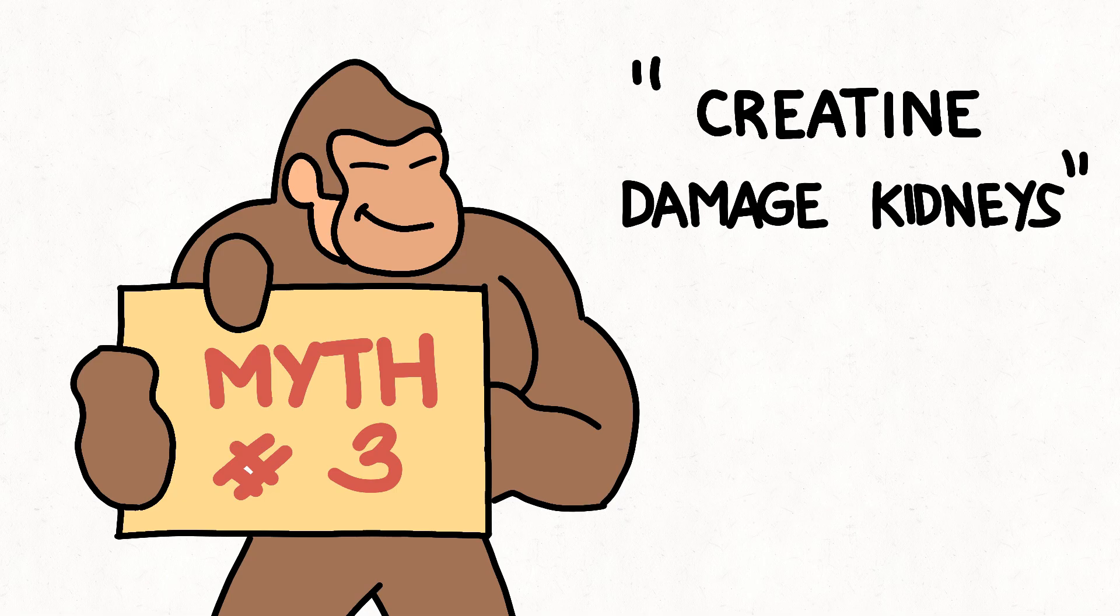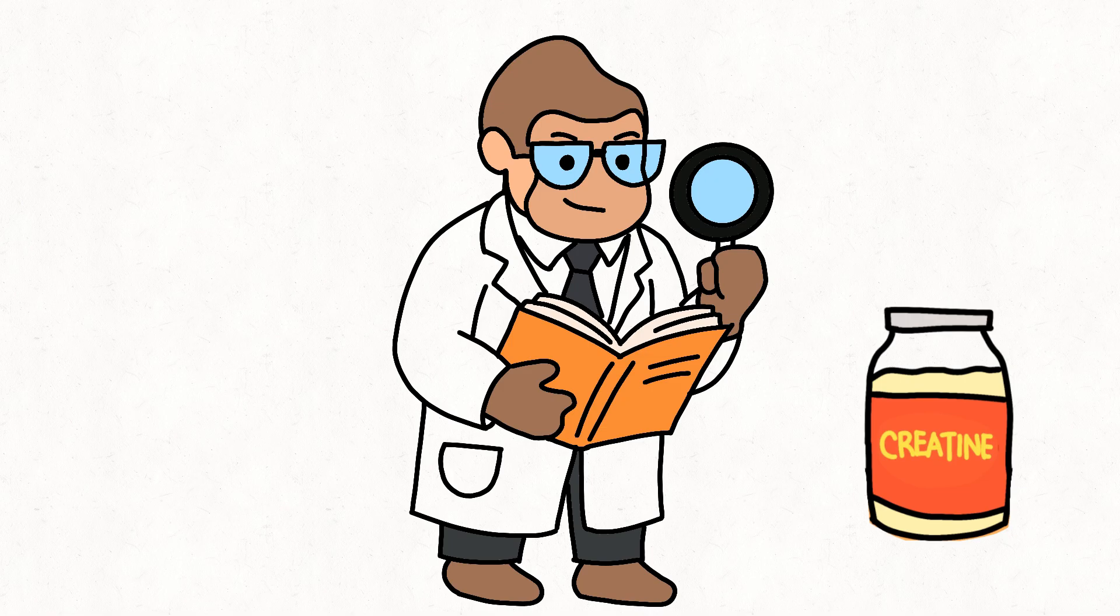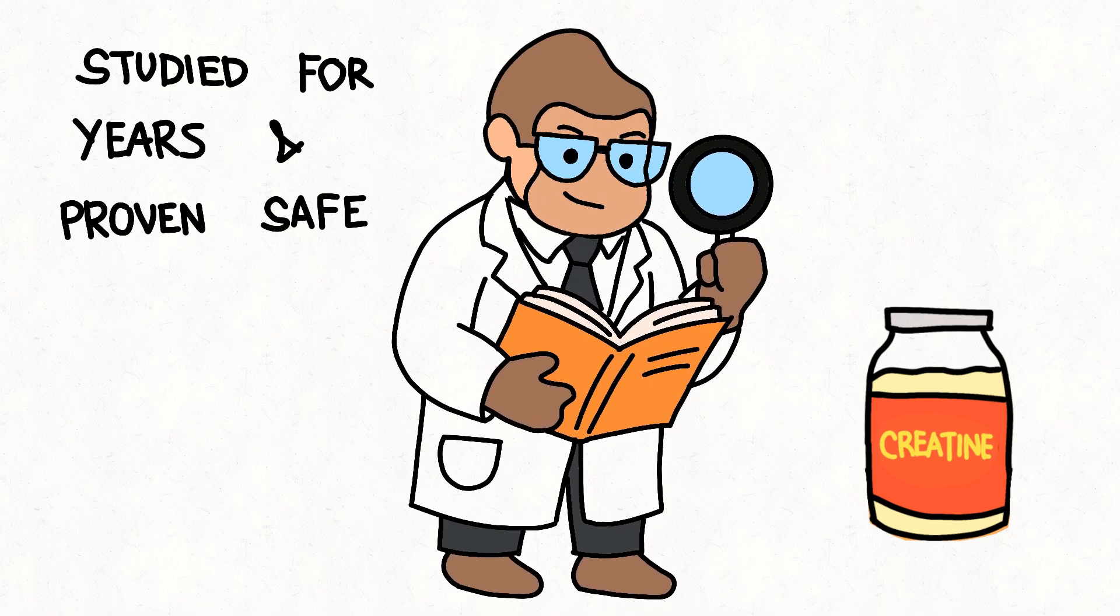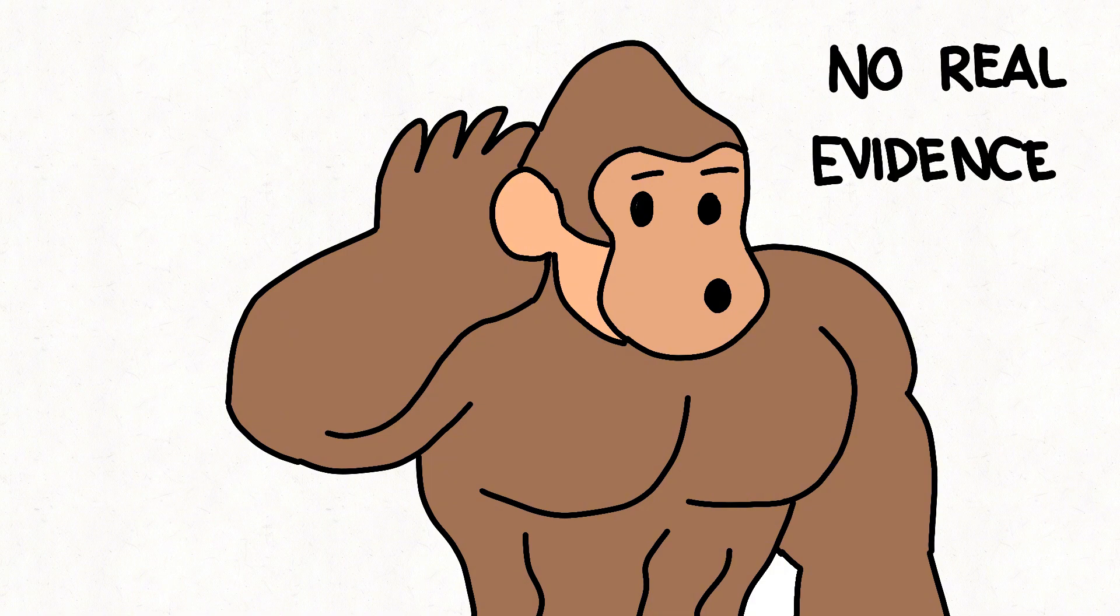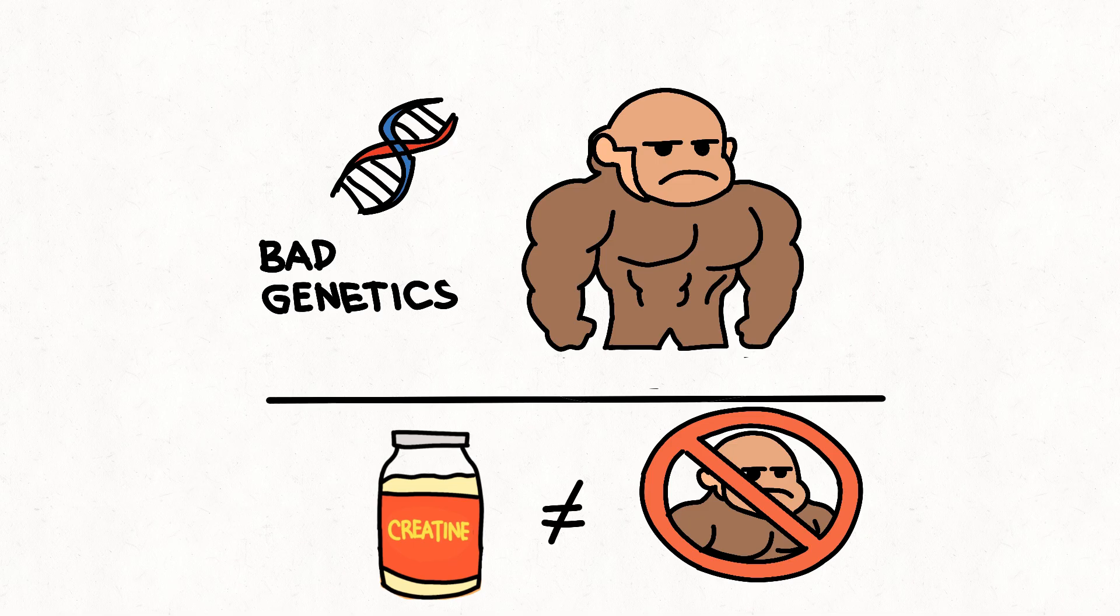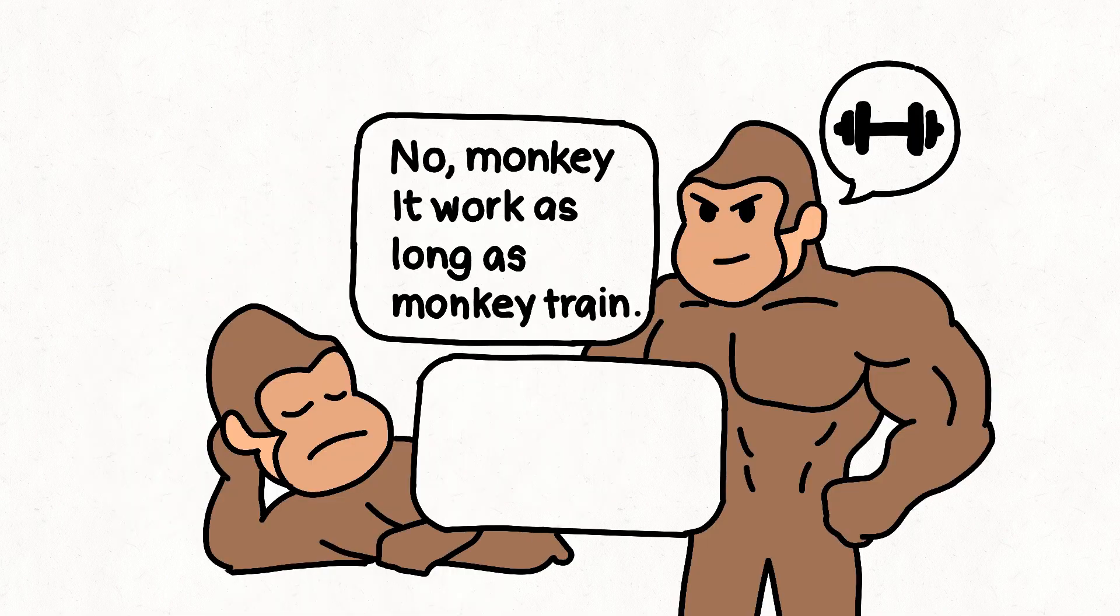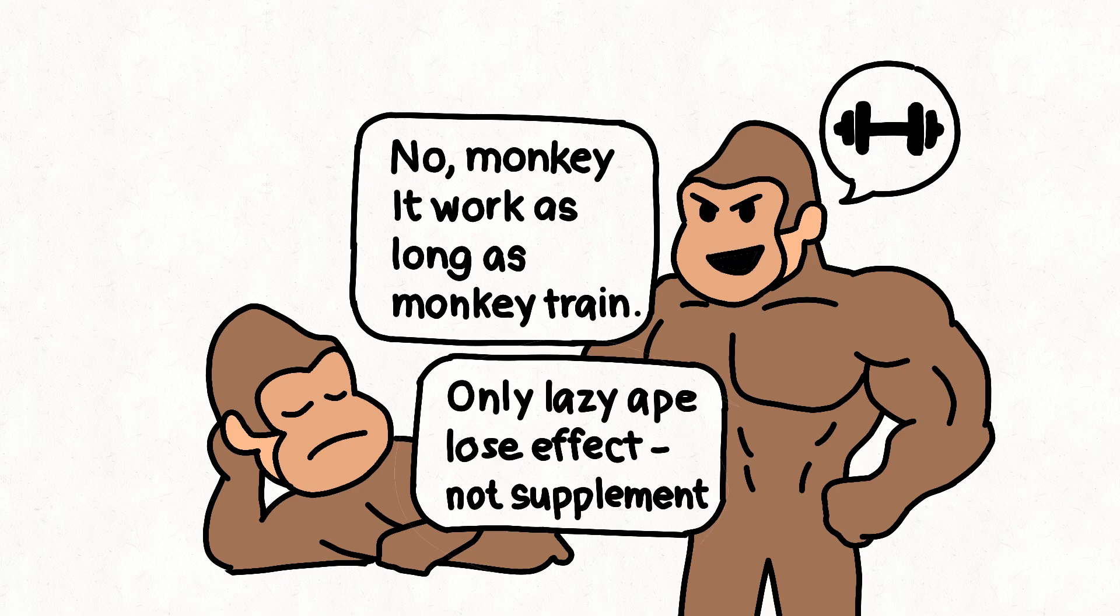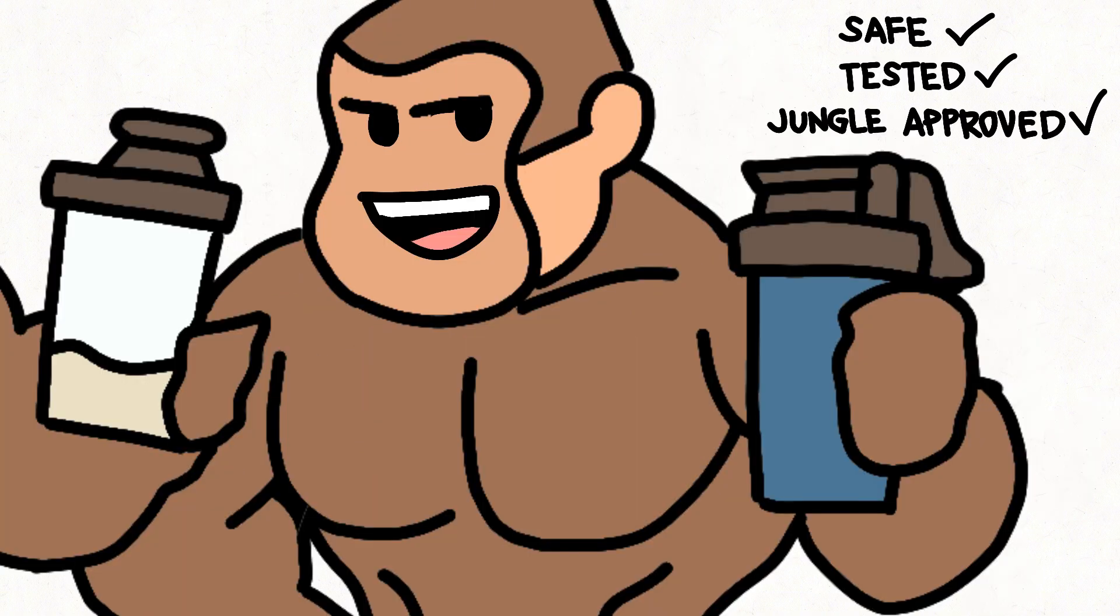Myth 3: Creatine damages kidneys. Only if monkey drinks no water and eats a trash diet. Study after study shows healthy apes are safe using creatine for years. Myth 4: Creatine causes hair loss. Jungle rumor. No real evidence. Only bad genetics make monkey bald. Creatine is not to blame for a shiny coconut head. Myth 5: Creatine stops working over time. No, monkey. It works as long as monkey trains. Only lazy apes lose the effect, not the supplement. So relax, small one. Creatine is safe, tested, and jungle approved.